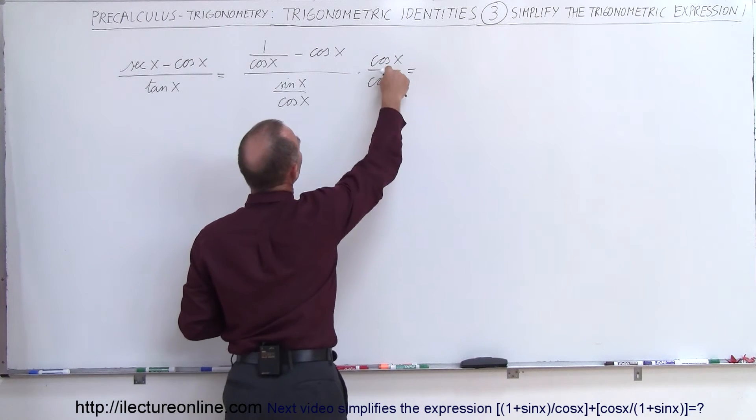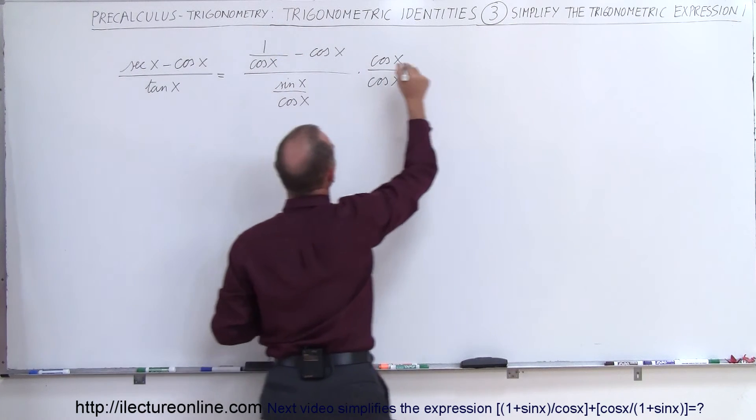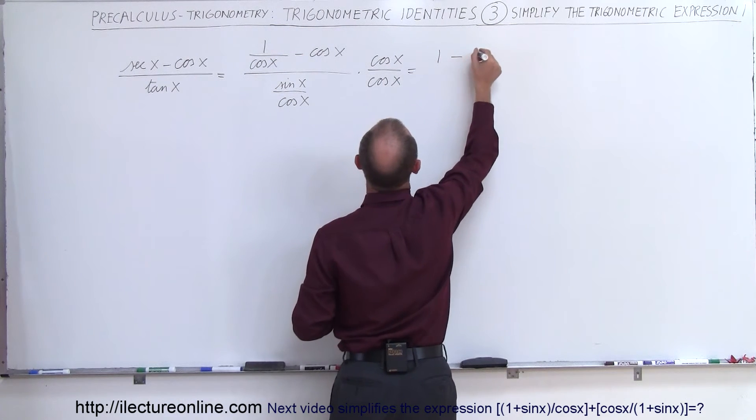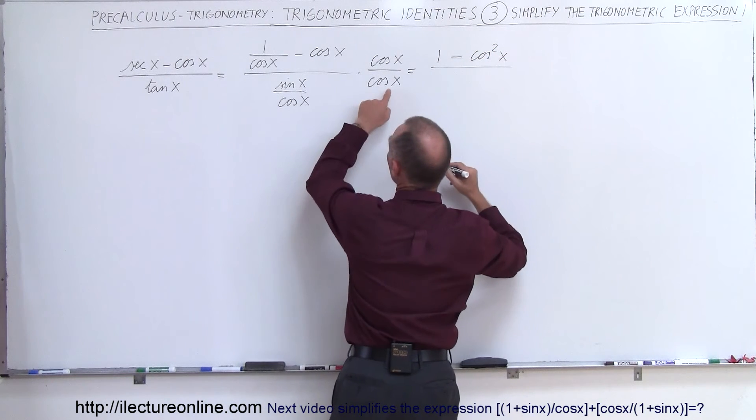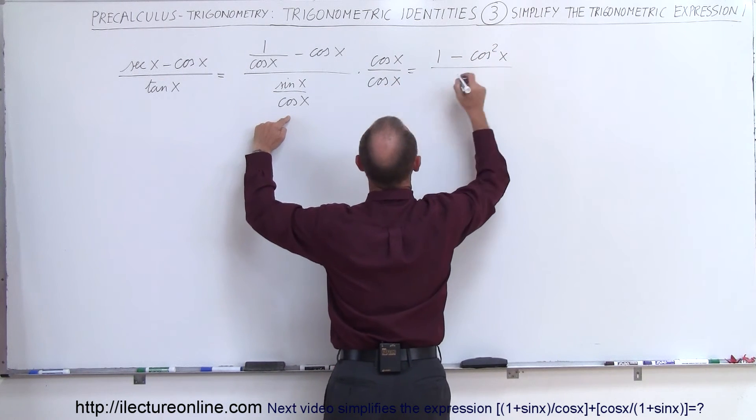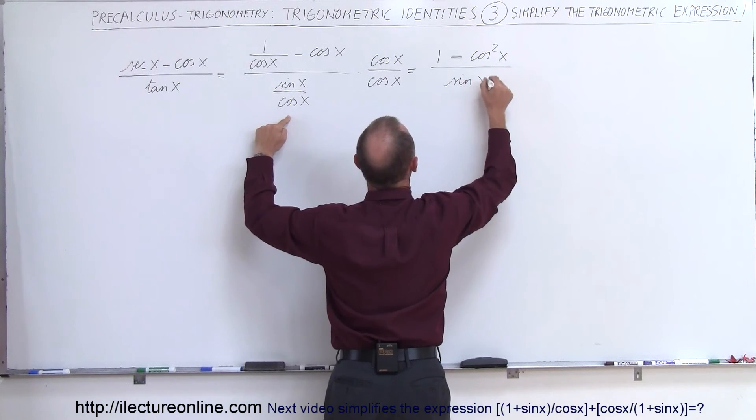So when we multiply this times this we get cosine of x divided by cosine of x which is 1 minus the cosine squared of x divided by, and when you multiply this times this, the cosine of x cancels out so you end up with the sine of x.